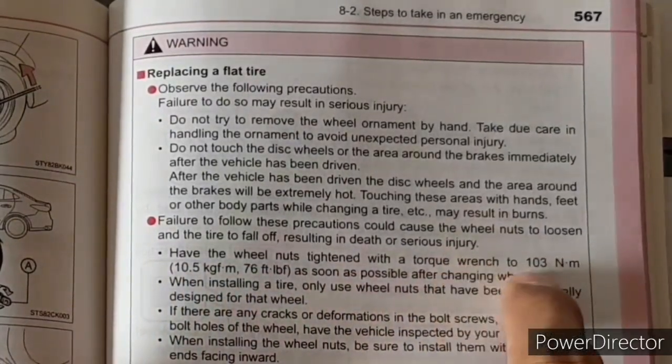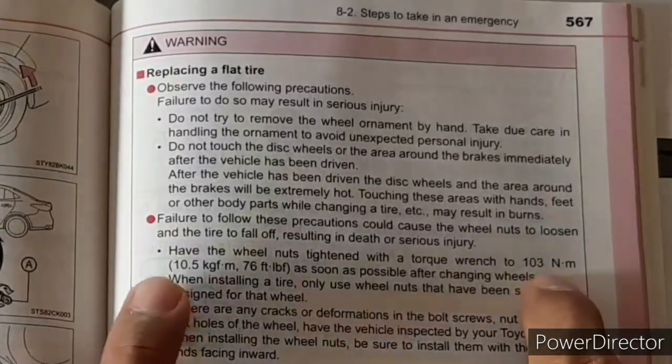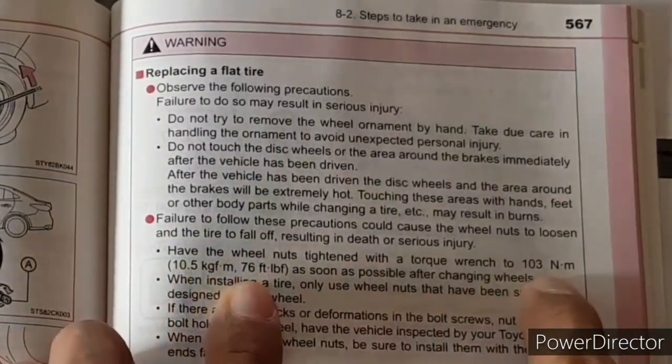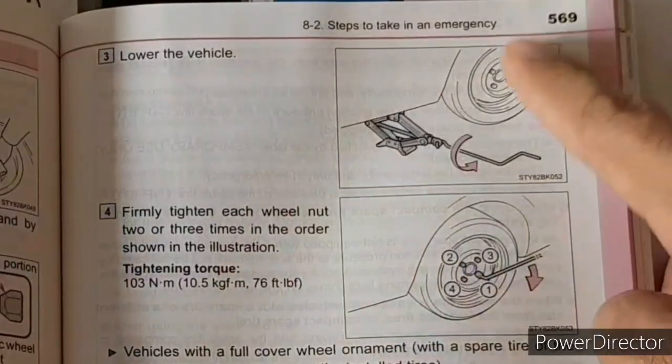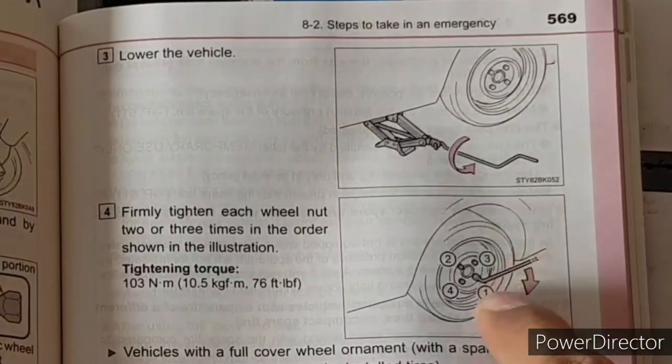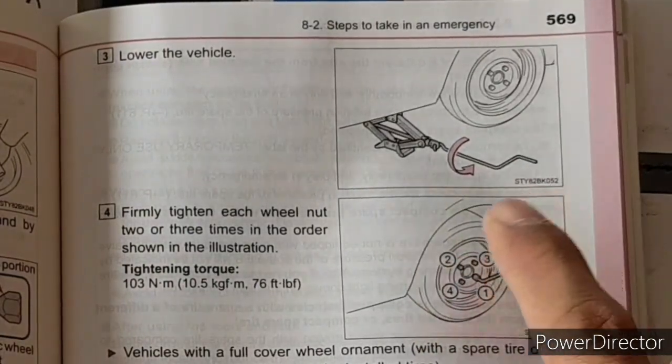So, based on our manual, suggested torque is 103 Nm or 10.5 kgm of force or 76 lb-feet of force using a torque wrench which is one of the tools that you might want to have. Follow the order as illustrated here, 1, 2, 3, and 4.